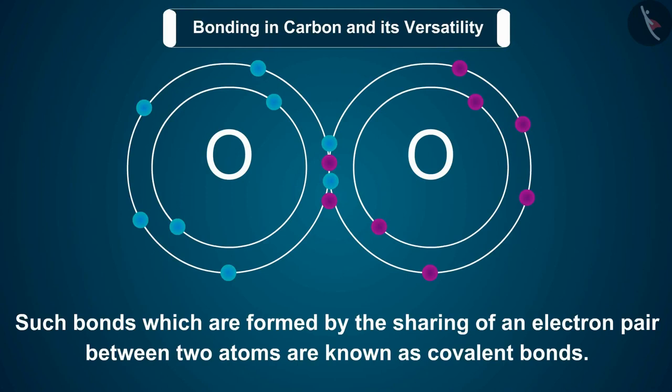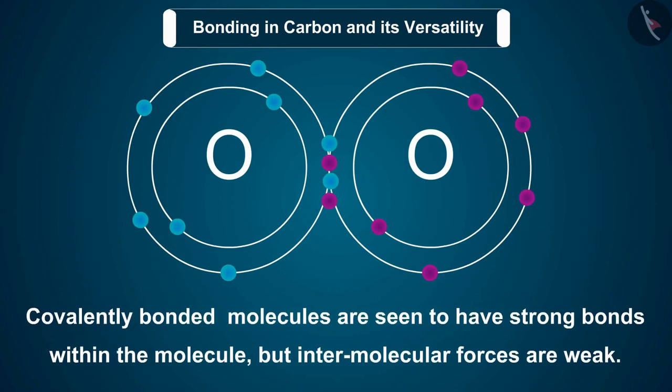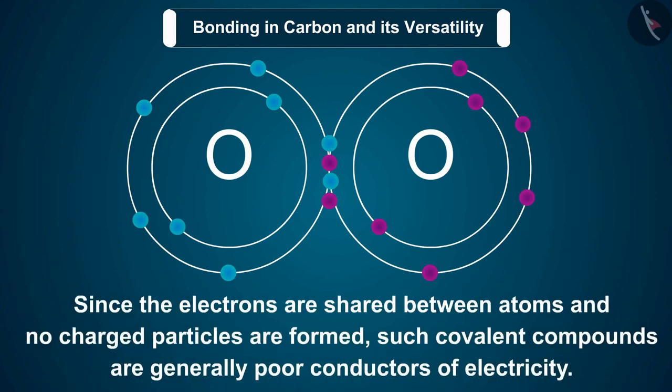Such bonds formed by the sharing of an electron pair between two atoms are known as covalent bonds. Covalently bonded molecules have strong bonds within the molecule, but intermolecular forces are weak. This gives rise to the low melting and boiling points of these compounds. Since electrons are shared and no charged particles are formed, covalent compounds are generally poor conductors of electricity.